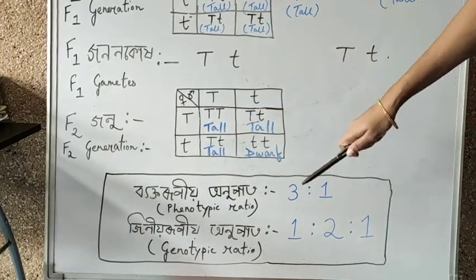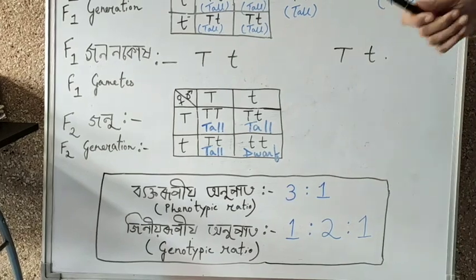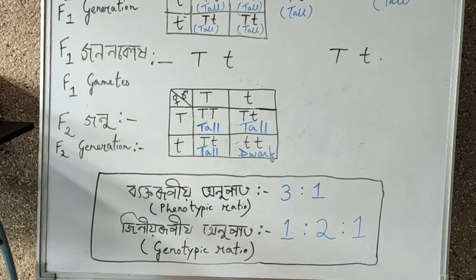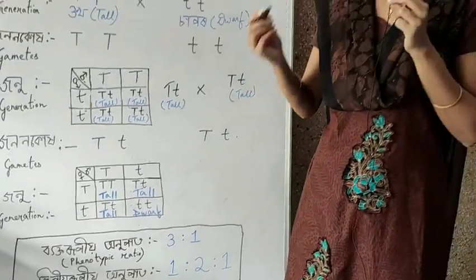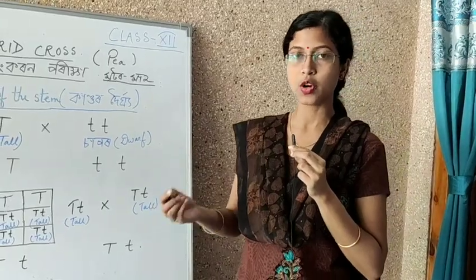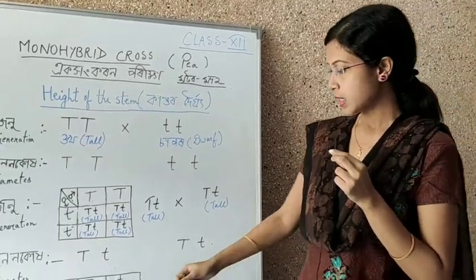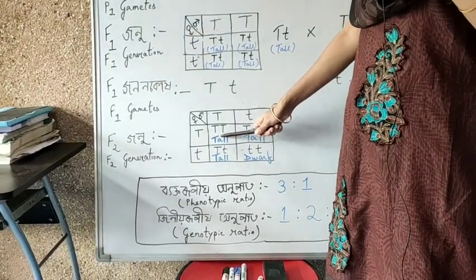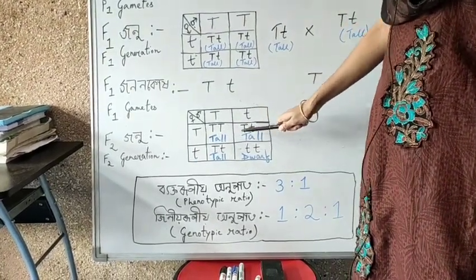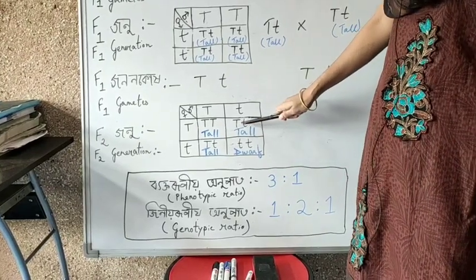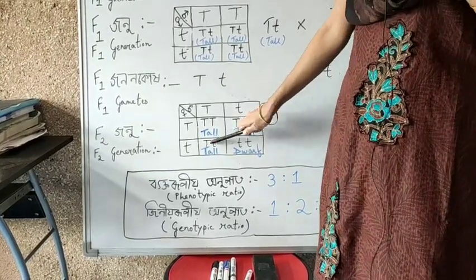Genotype refers to the genes that are responsible for their particular character. Capital T capital T is one genotype, capital T small t is another, and small t small t is the third genotype.